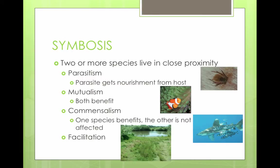Facilitation is when one species benefits another without living in direct contact with each other. For example, in salt marshes, there's one type of rush plant that prevents salt buildup, making it more hospitable for other plants to live there.